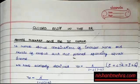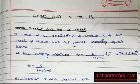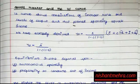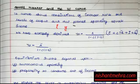Goods market and the IS curve. This is the continuation of the earlier lecture on the closed economy in the short run. The goods market IS curve shows the combination of interest rates and output such that your planned spending is equal to income.